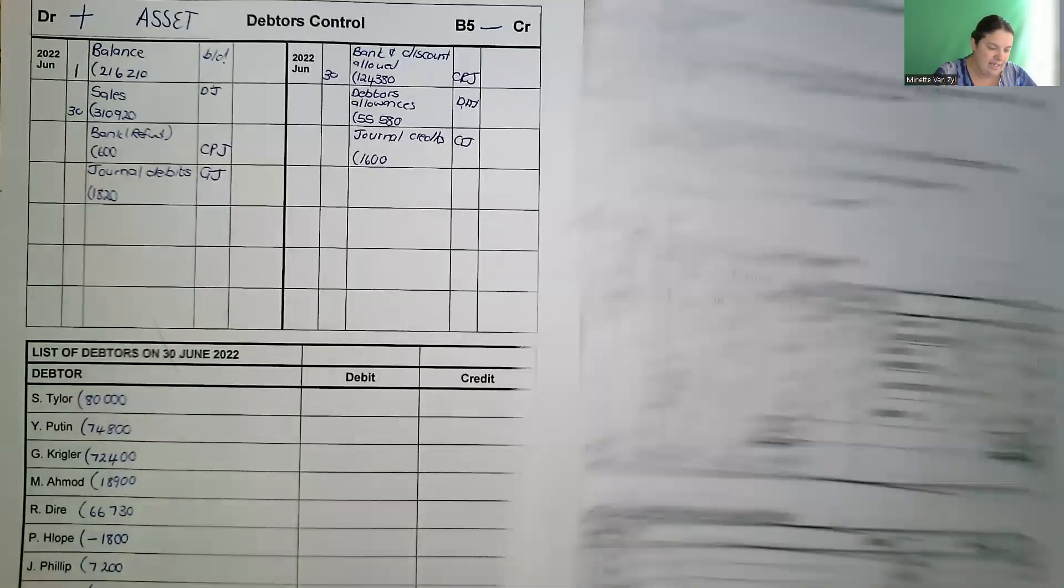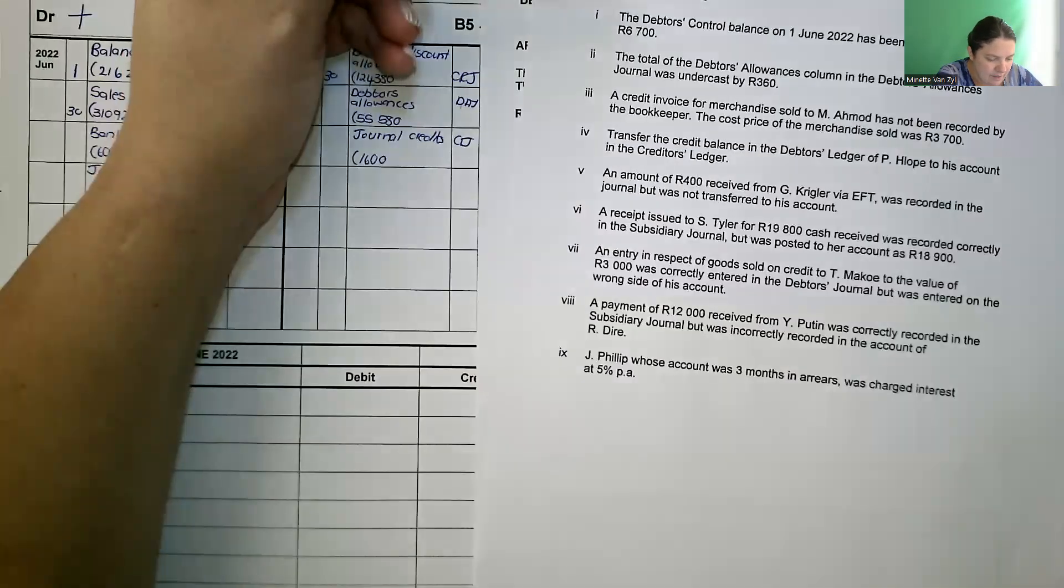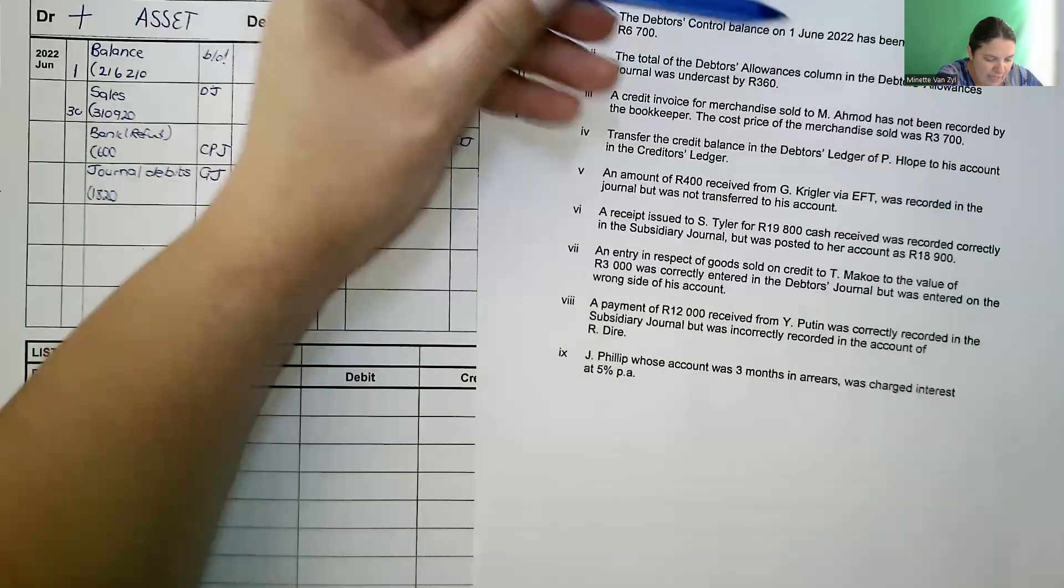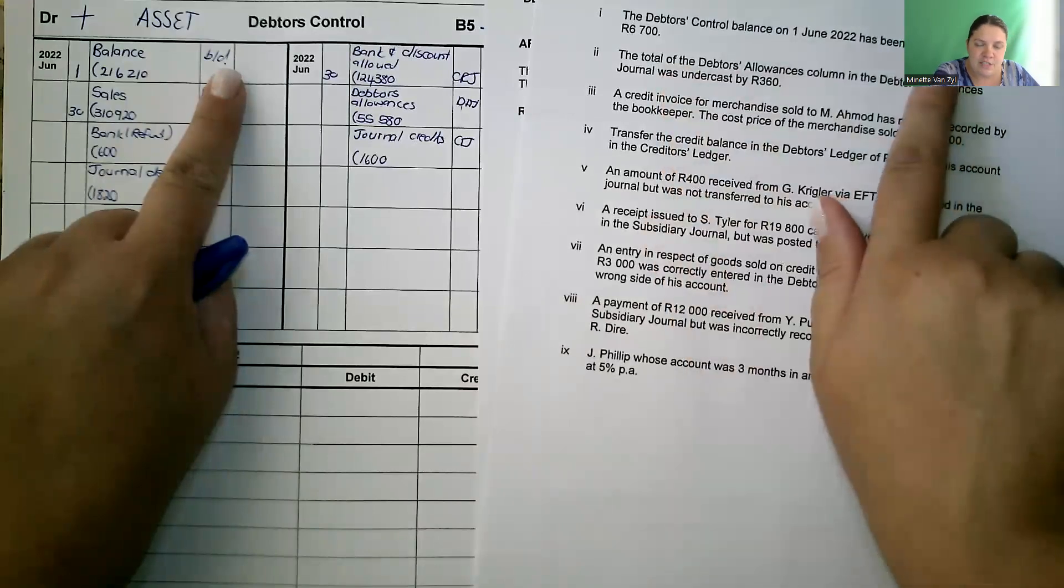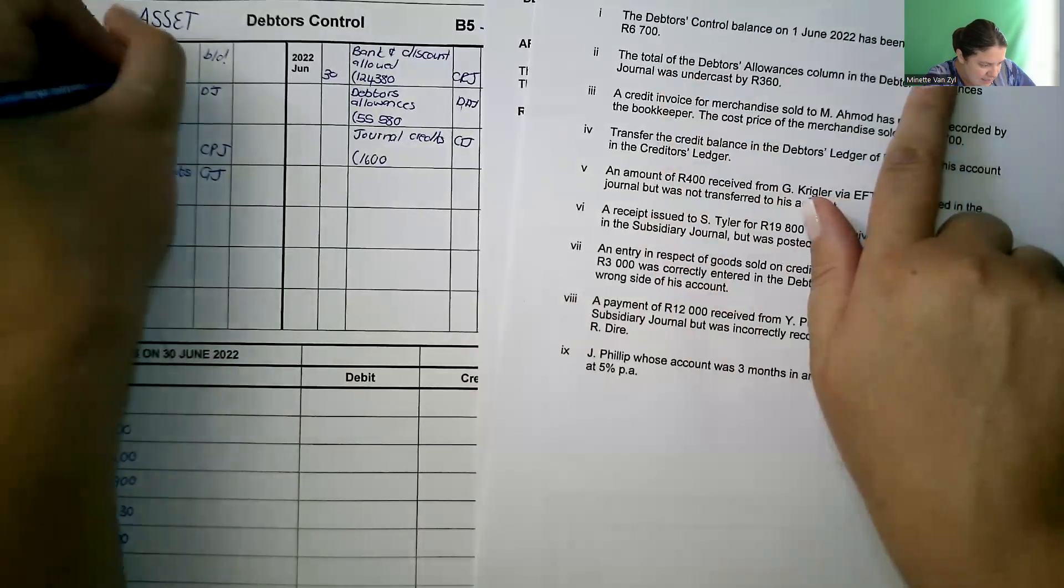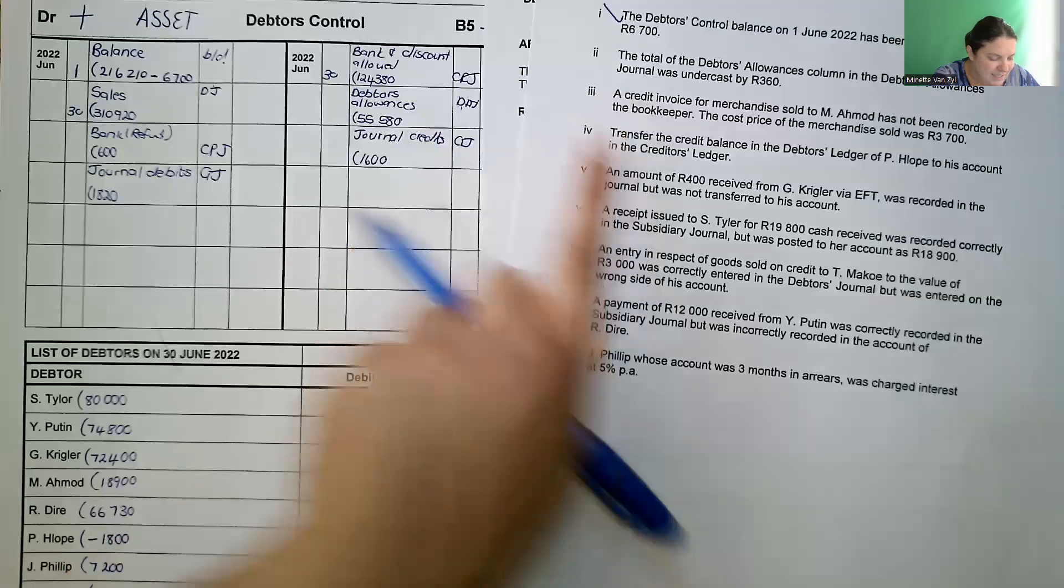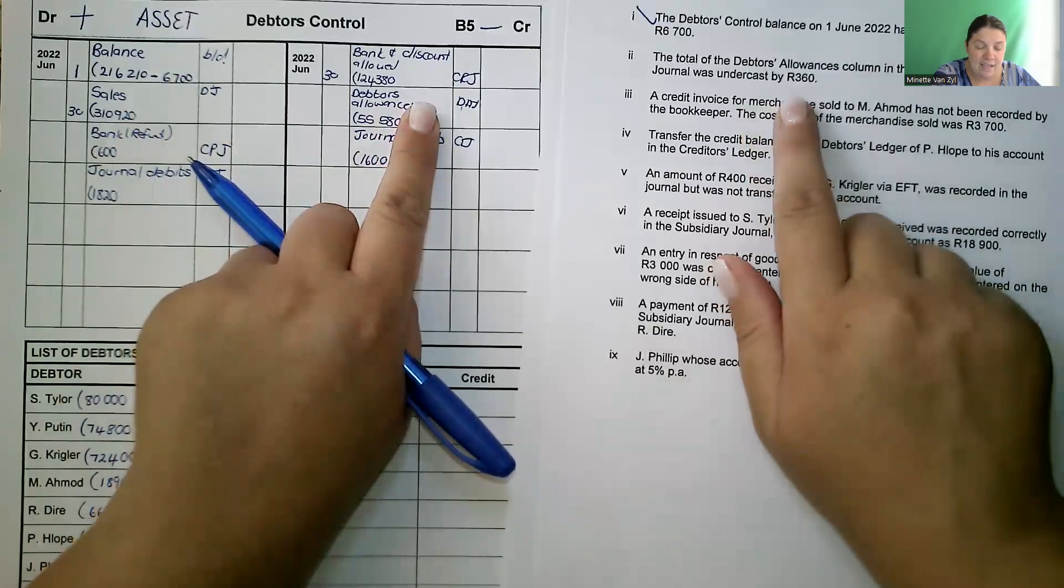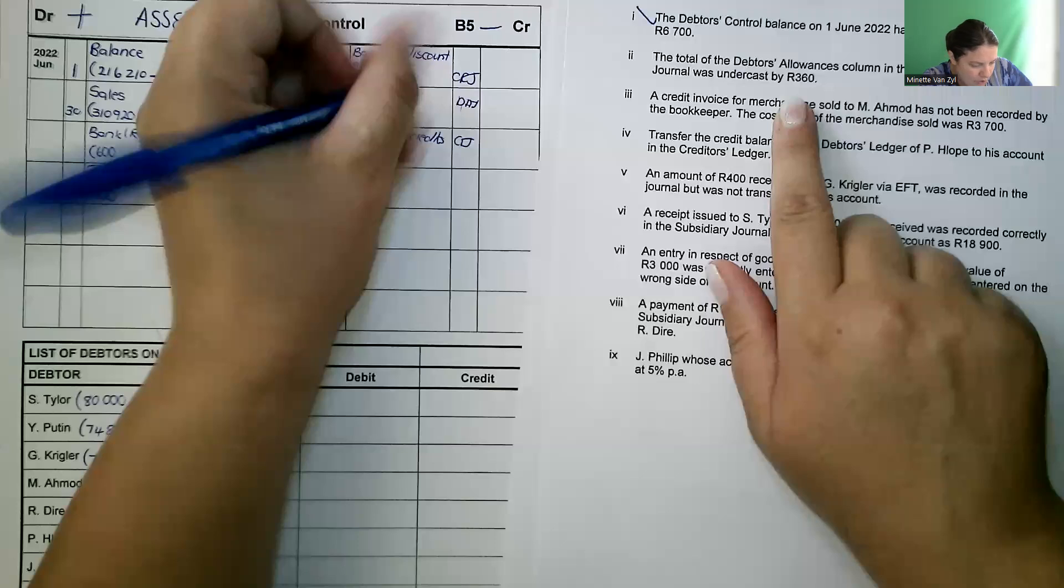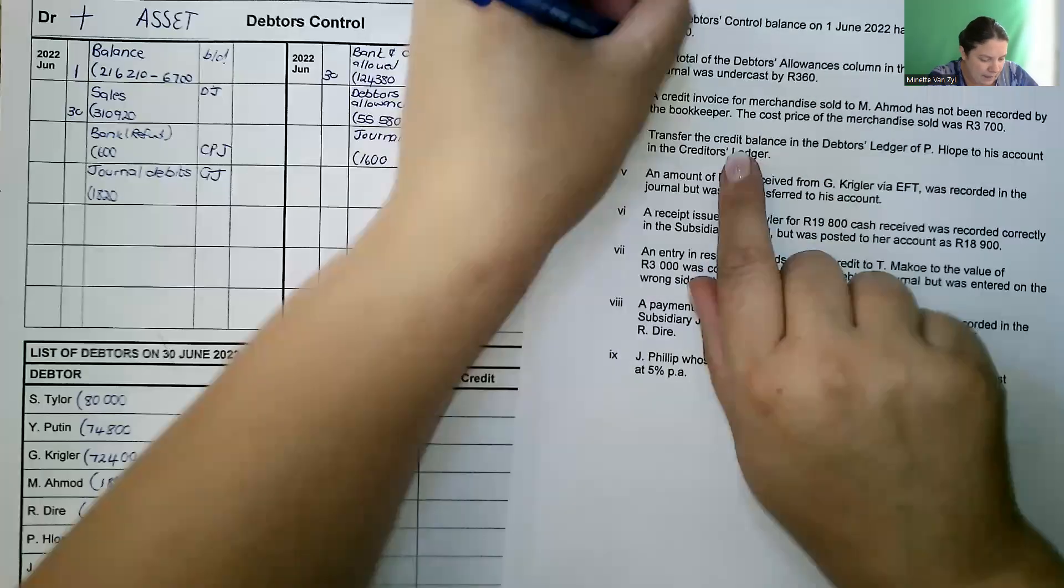Then we can start with the errors and omissions. First, number one. The debtors control balance on June the 1st was overstated by 6,700. Overstated means it's too much. So I'm going to minus 6,700 from the balance. Number two. The total of the debtors allowances column in debtors allowance journal was undercast by 380. So it's 380 too little. So therefore, I'm going to add 380.